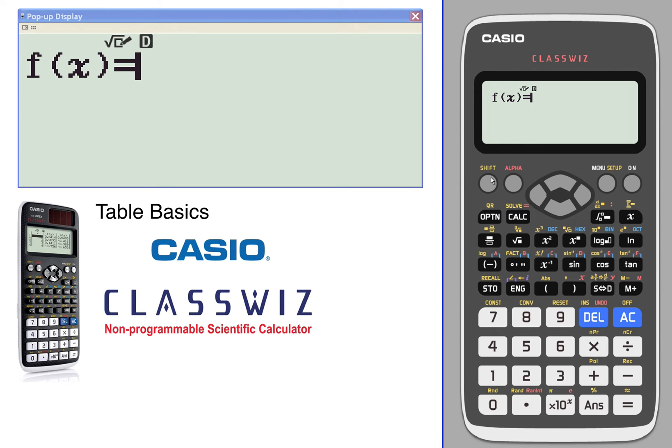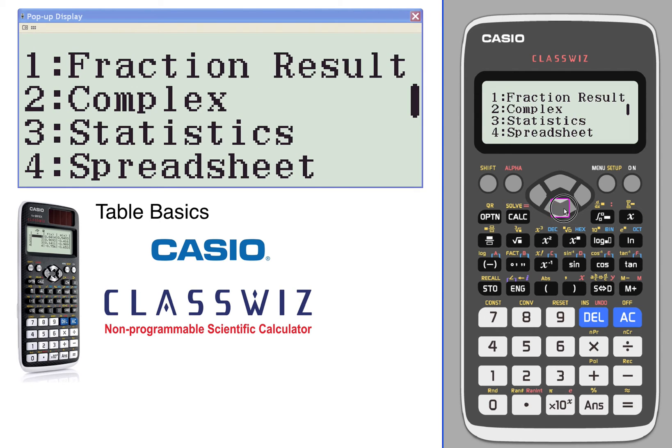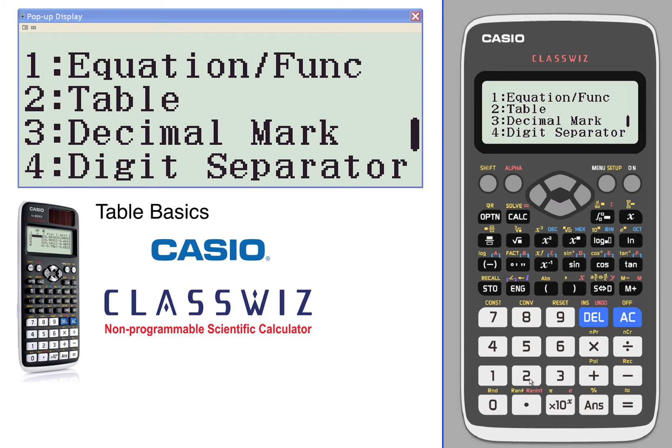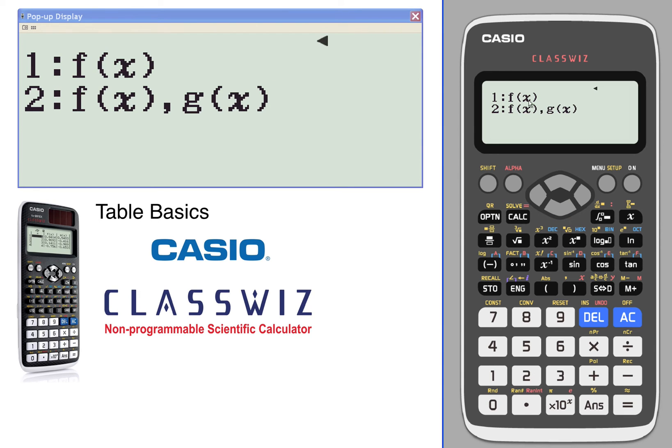We get the opportunity to enter a function. Going into the setup, we can access the table setup on the third screen. We can do a single or multiple function - we'll stick with a single function. Let's make it interesting: we'll take x squared minus four.